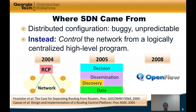That control point would actually know the answers to those forwarding questions already. We did this in the context of the Internet's inter-domain routing protocol, border gateway protocol, or BGP, and that central control point was called the routing control platform, or RCP.